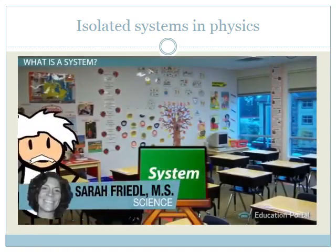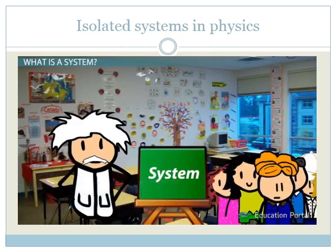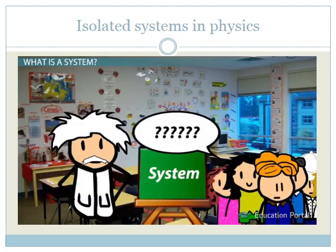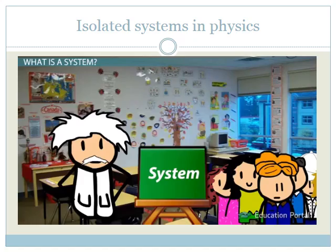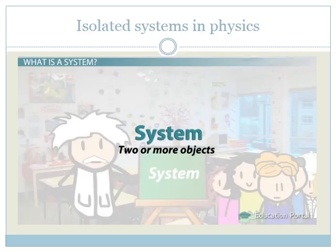We talk a lot about systems in physics, but this tends to be a tough concept for many students. The idea of a system is simple, but the application of it can be somewhat tricky. Simply put, a system is two or more objects. But this is a bit vague, isn't it?